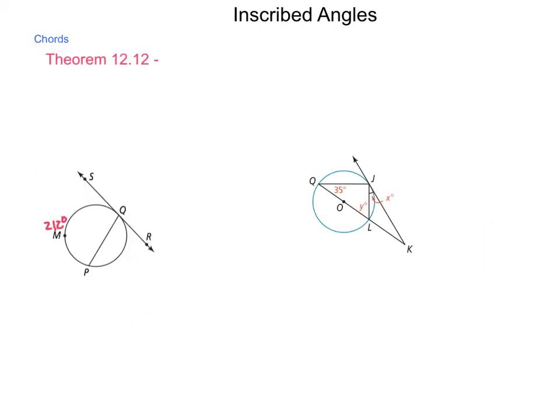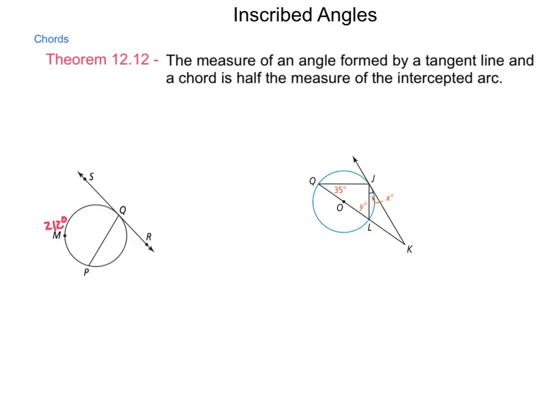There's a theorem 12-12, which talks about this, and it reads, the measure of an angle formed by a tangent line and a chord is half the measure of the intercepted arc.